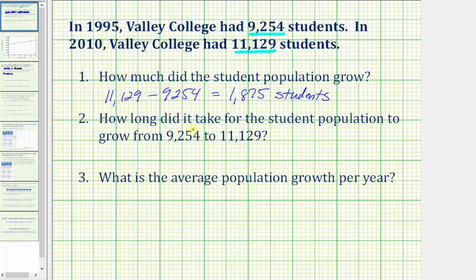Number two, how long did it take for the student population to grow from 9,254 to 11,129? To find how long this took, we need to find the difference in years from 2010 and 1995. So we'll take 2010 and subtract 1995, which equals 15 years. So it took 15 years for the student population to grow from this amount to this amount.